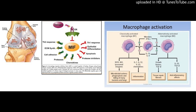Materials and Methods: The LPS-activated RAW 264.7 macrophage cells were used to determine the anti-inflammatory effects of Z590 in vitro. A rat adjuvant-induced arthritis (AIA) model was used to determine the anti-arthritic effects of Z590 in vivo.